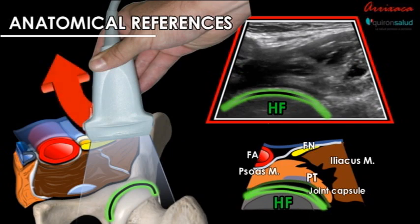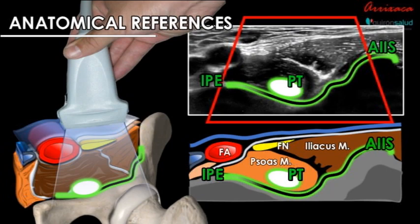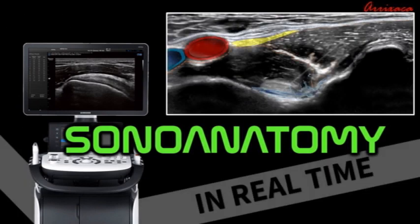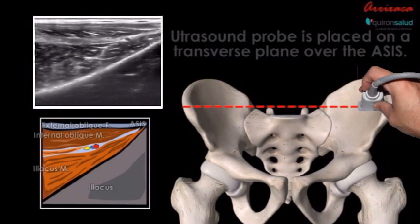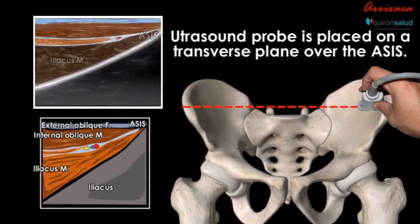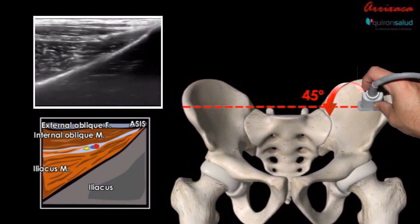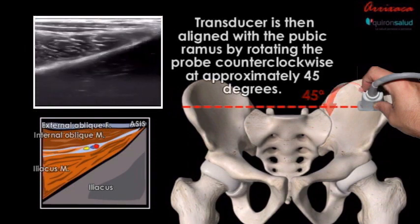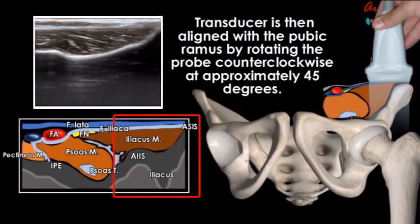At this point we return to our initial position to identify the reference points again. With the ultrasound probe placed over the ASIS transverse line and with the ASIS identified, the transducer is then rotated 45 degrees again, aligning the ASIS, the AIIS, the iliopubic eminence, and the pubic ramus for dynamic viewing.